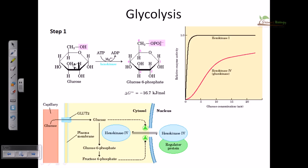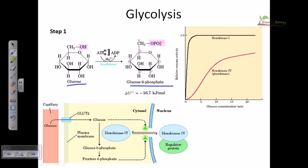In the very first step of glycolysis, our substrate is glucose and we need to convert this glucose into glucose-6-phosphate to start the glycolysis process. We take the phosphate from ATP and attach it onto the sixth carbon position of glucose to produce glucose-6-phosphate.